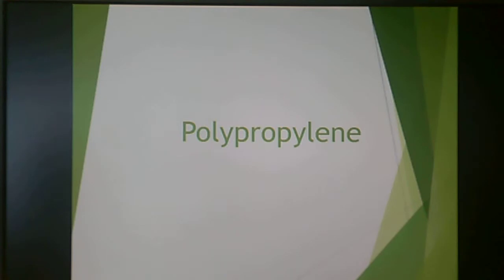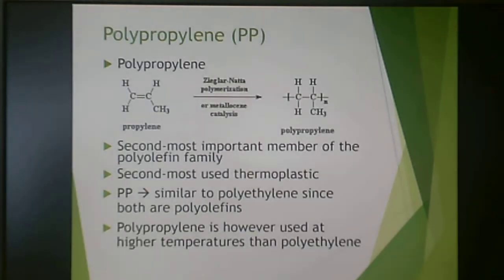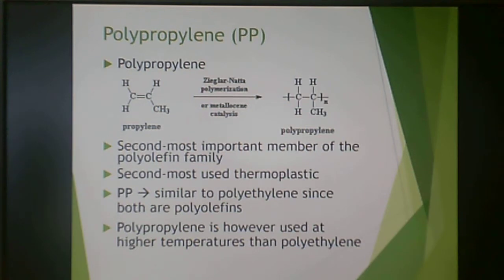Polypropylene is the other main homopolymer found in the polyolefin family. In terms of its structure, it looks very similar to polyethylene, but instead of there being a hydrogen here, we have a methyl group. So this is propylene.